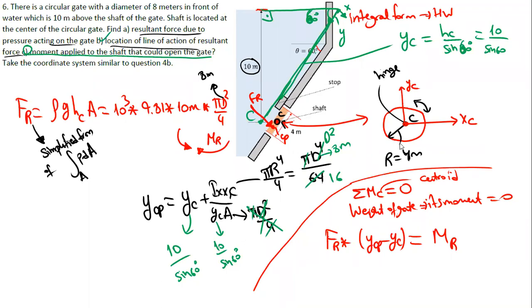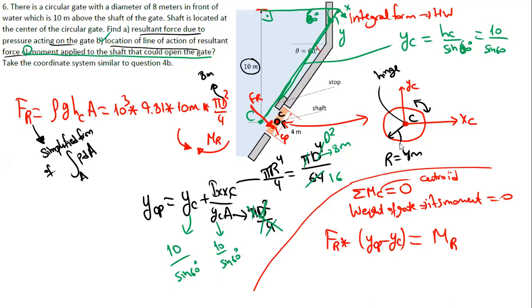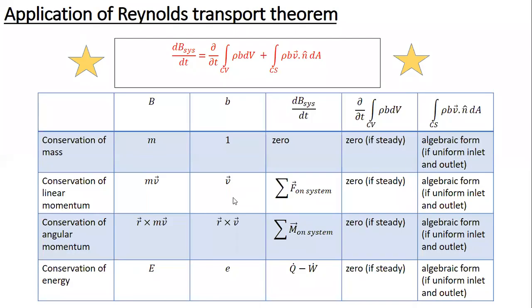For the new lecture we'll talk about conservation laws: conservation of momentum, conservation of energy. For conservation laws we'll have three types: conservation of mass, conservation of linear momentum, conservation of angular momentum, and conservation of energy.